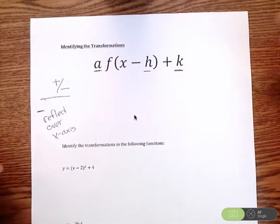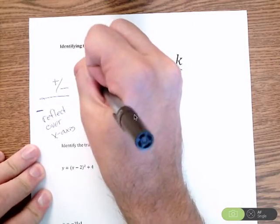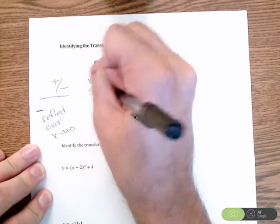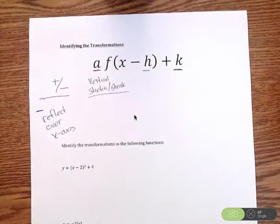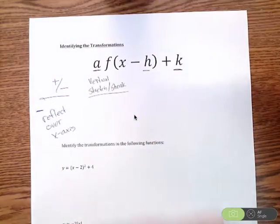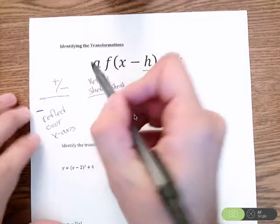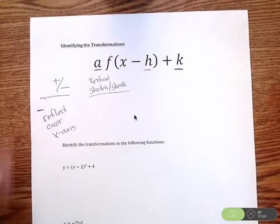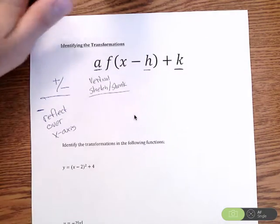The next thing A can do is a vertical stretch or shrink. So this is going to vertically stretch or shrink your function, really stretch it out vertically or shrink it down. We're going to focus on whatever number is in place of A, and an easy way I use to think about it is something that is vertical is your height.